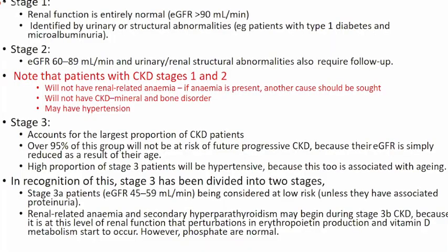Stage one patients have a GFR essentially above 90 mls per minute but are identified by other abnormalities — such as a type 1 diabetic patient presenting with microalbuminuria, or structural abnormalities on renal ultrasound like enlarged or shrunken kidneys with a normal GFR. Stage two patients have a GFR between 60 to 89, may or may not have renal dysfunction, and require only regular follow-up with a basic physician, not a nephrologist. Stage one and stage two patients do not have complications of CKD such as anemia or mineral bone disease.